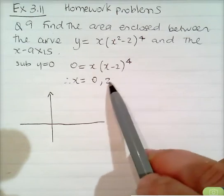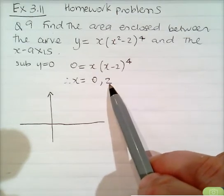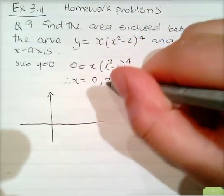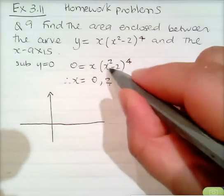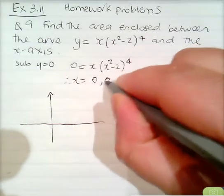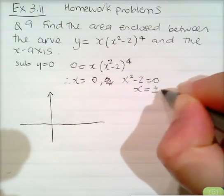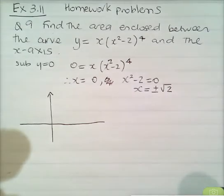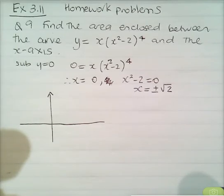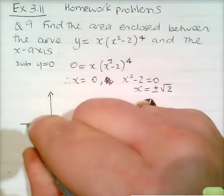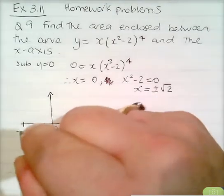Actually, the bracket is x squared minus 2 to the power of 4, so we also need x squared minus 2 equals 0, giving x equals plus or minus the square root of 2. So our x-intercepts are at negative root 2, 0, and positive root 2.